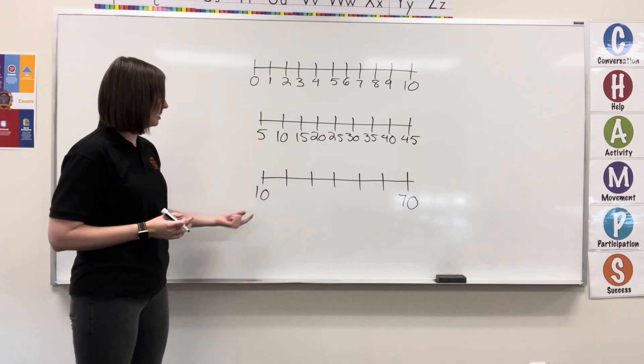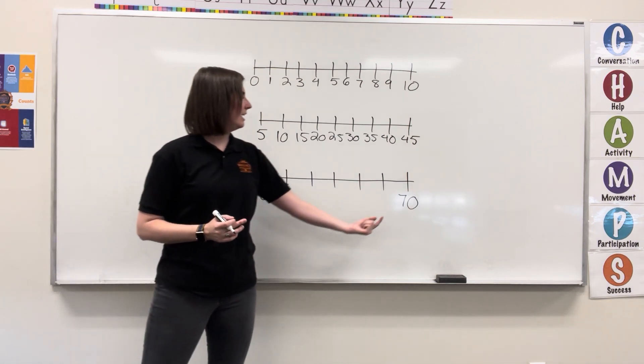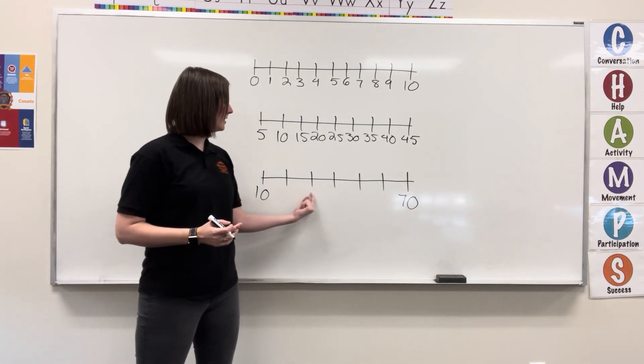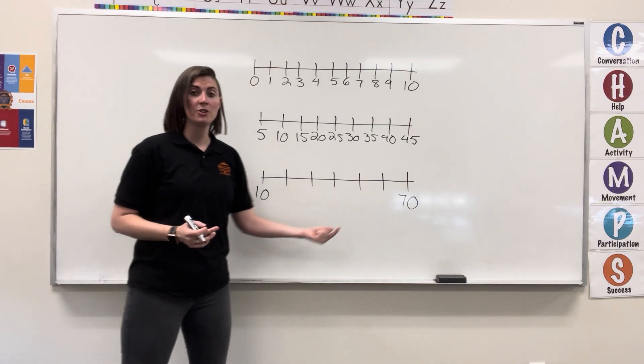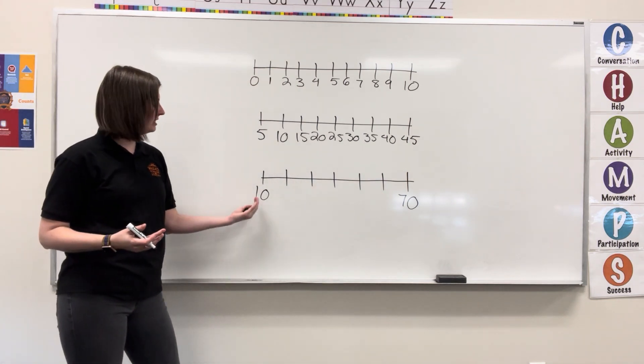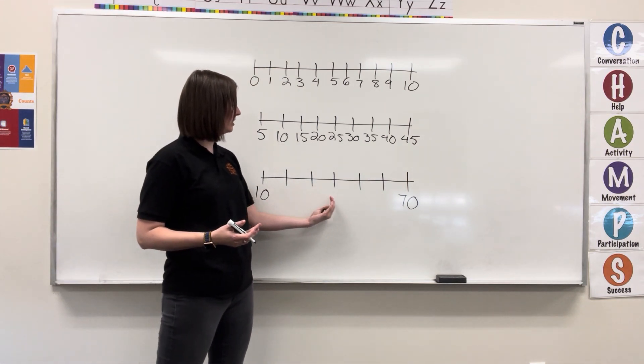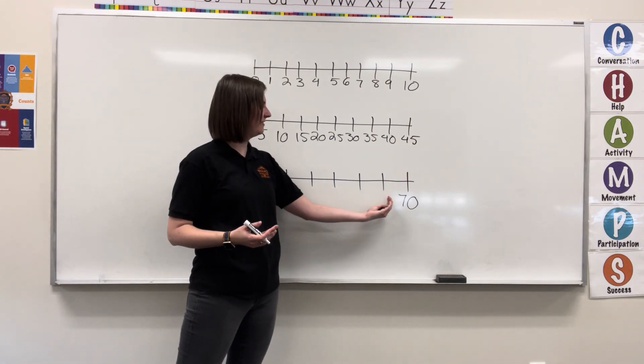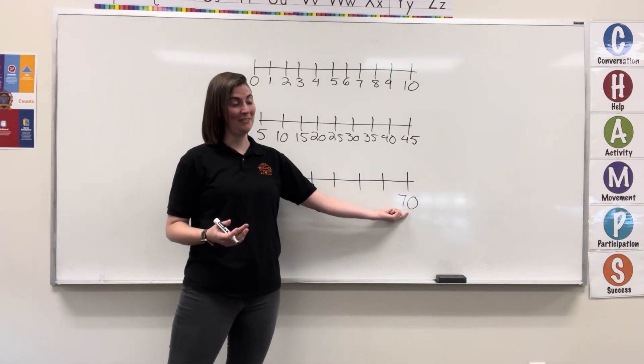In the final example, our number line starts at 10 and ends at 70. There are very few in here. So if we try to count by 5's, we go 10, 15, 20, 25, 30, 35, not quite by 5's.